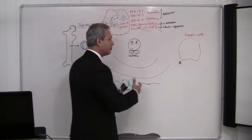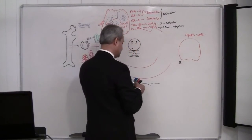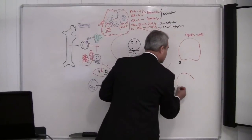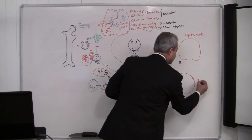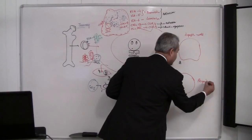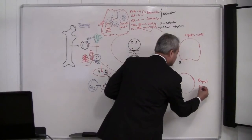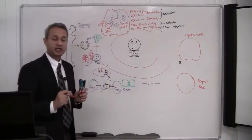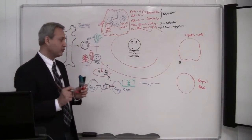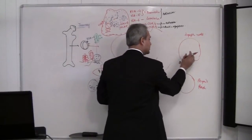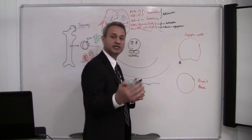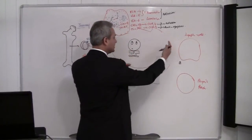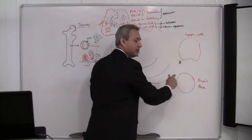So we have the lymph node and the Peyer's patches. The cells present in the lymph node and Peyer's patches express certain proteins which allow T cells to stick to them.